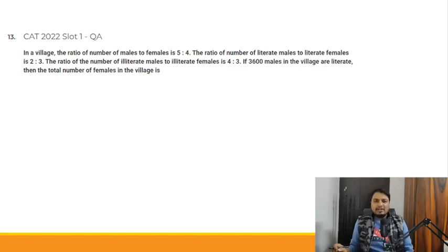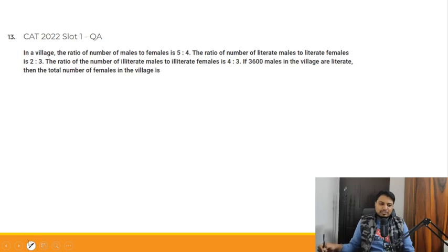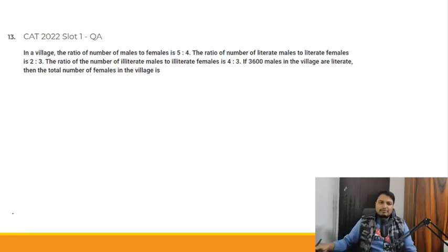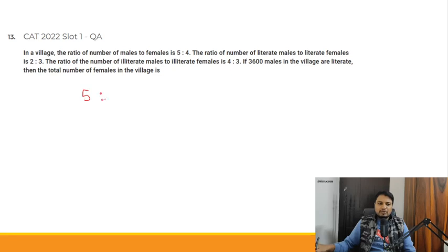This is a ratio and proportion question and it can be solved easily. In a village, the ratio of number of males to females is 5:4. So first, the total ratio given for males and females is 5:4 — these are males and these are females.